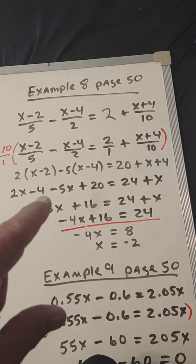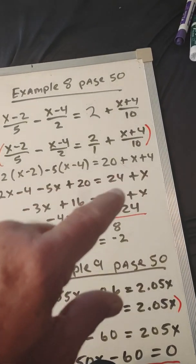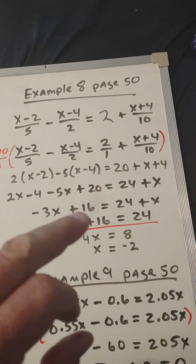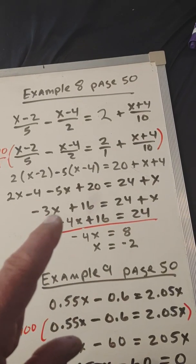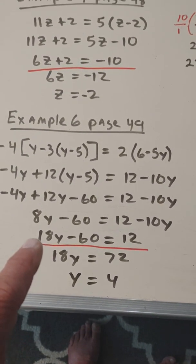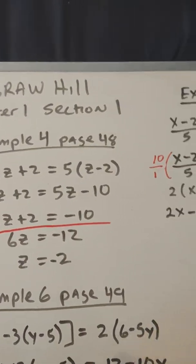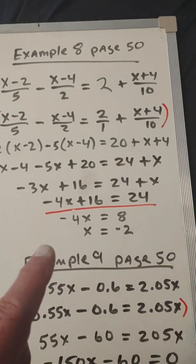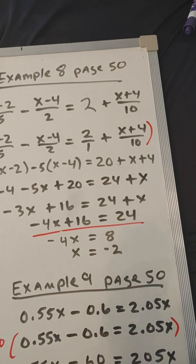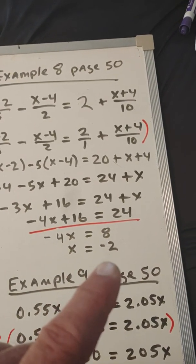Distribute, I get 2x minus 4, negative 5x plus 20. Combine like terms here, 4 and 20 is 24 plus x. Combine like terms here, and I get negative 3x plus 16 equals 24 plus x. Notice that this line here is the same that we had here. So it's a common practice that that's where you're going to end up in most of these problems. So what we're going to do is subtract this x over. We get negative 4x plus 16 equals 24. Two-step form. Subtract the 16 from 24, get 8, divide by the negative 4, get x equals negative 2.